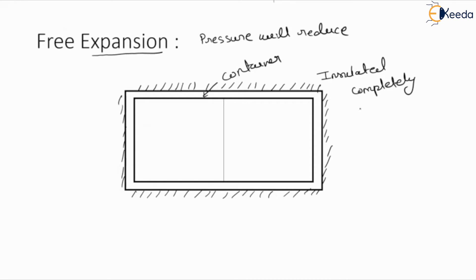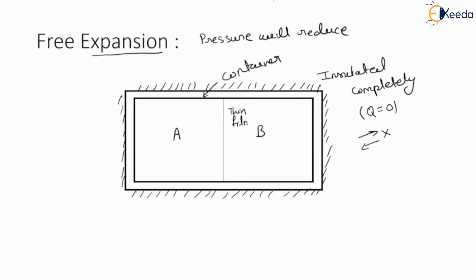Insulation means there is no heat transfer to and from the surrounding to the system, or from the system to the surrounding. So no heat transfer is possible because of this insulation. Now, we are dividing this container into two parts, A and B, and these two parts are divided by a thin film.